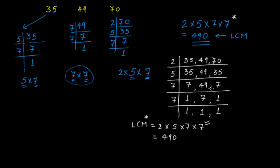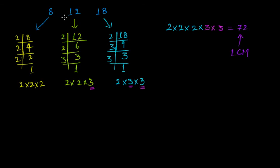Here we calculated the prime factorizations separately, but with this method we do it all together in a faster way. Now for the third and last example: we have 8, 12, and 18. Draw the vertical and horizontal lines.